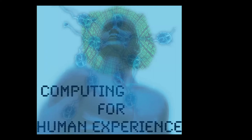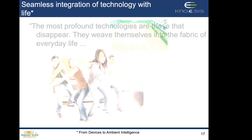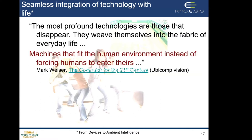Mobile technology, sensor technology, and other humans in the loop can all improve the human experience — here, the farmer getting a better crop. The theme is that technology is getting seamlessly integrated with life. The idea comes from 'devices to ambient intelligence,' and the author says the most profound technologies are those that disappear — they weave themselves into the fabric of everyday life. Another vision is machines that feed the human environment instead of forcing humans to enter their world. This is the ubicomp vision coined by Mark Weiser.